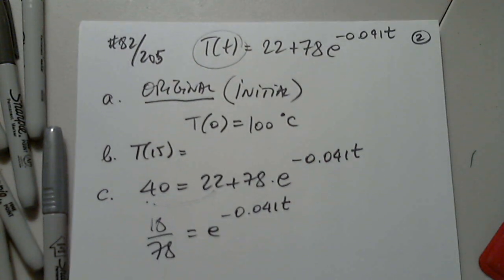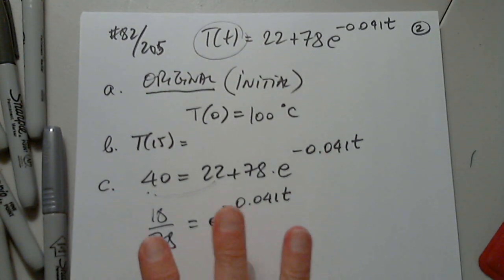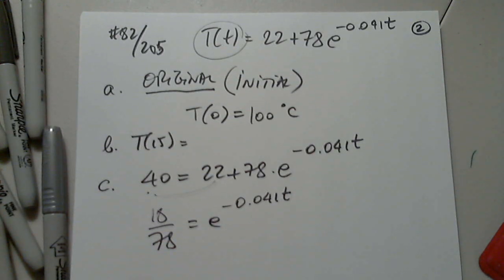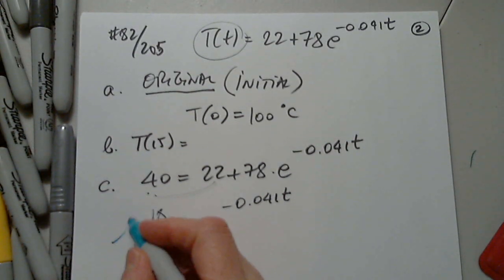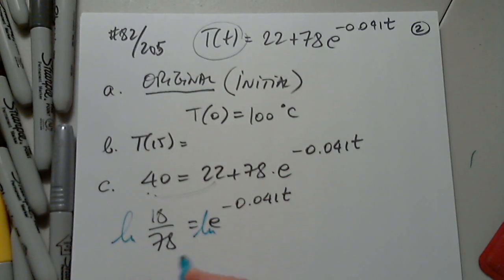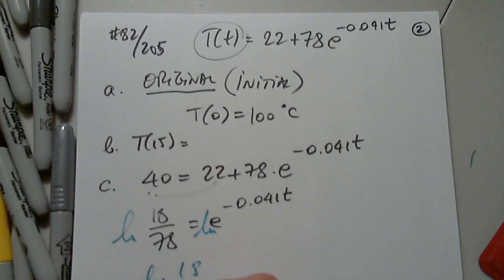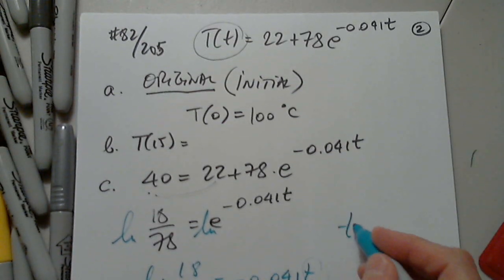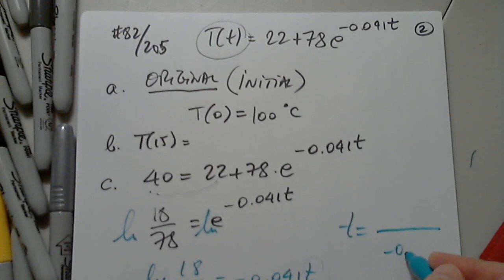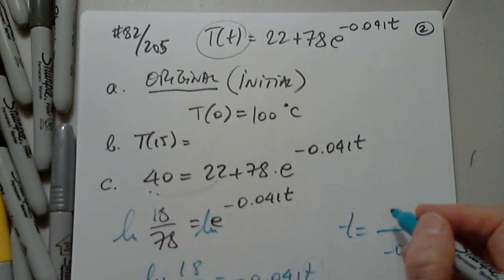To solve for T, we apply natural log to both sides. So natural log of 18 over 78 equals negative 0.041t. Then, to solve for T, we divide everything by negative 0.041, so T equals natural log of (18/78) divided by negative 0.041.